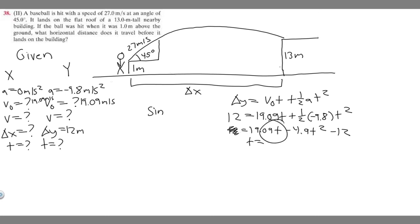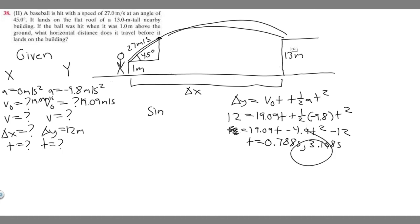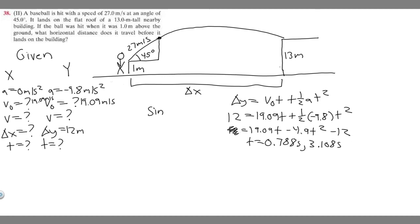Plugging this into the calculator, you get t equals 0.788 seconds and t equals 3.108 seconds. We have two values because the ball crosses the height of 13 meters twice — once on the way up at 0.788 seconds, and once on the way down at 3.108 seconds. The real value we're going to use is 3.108 seconds, since that's when it actually lands on the building.